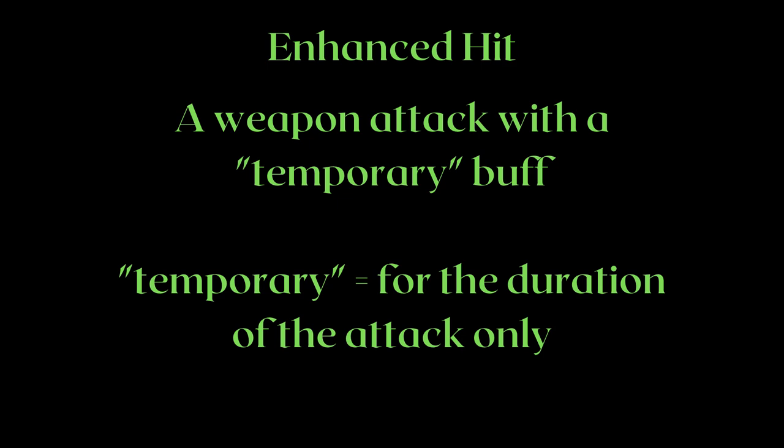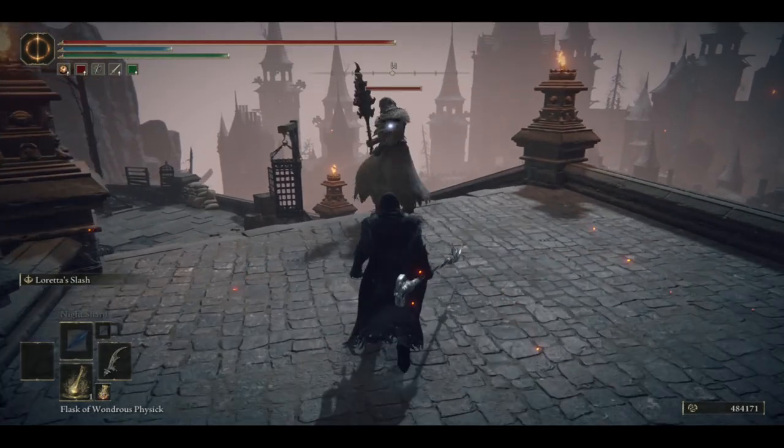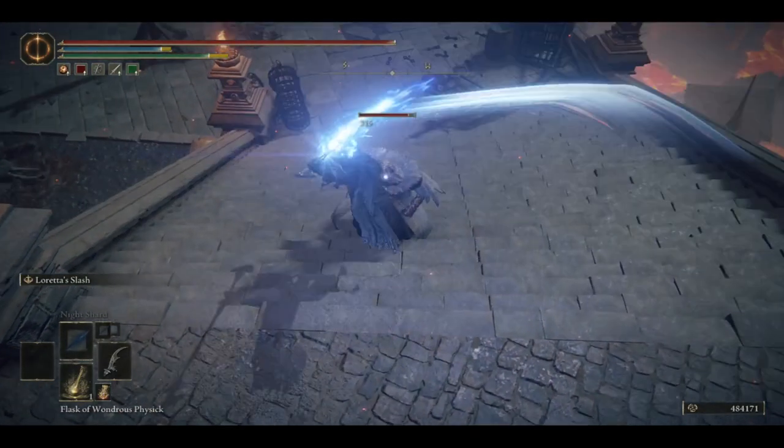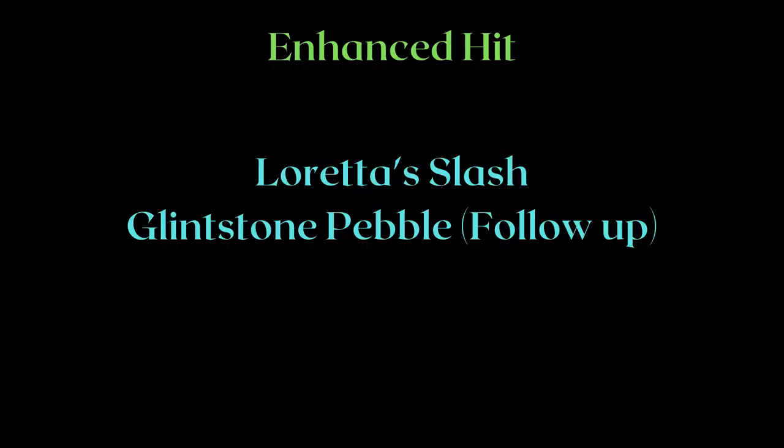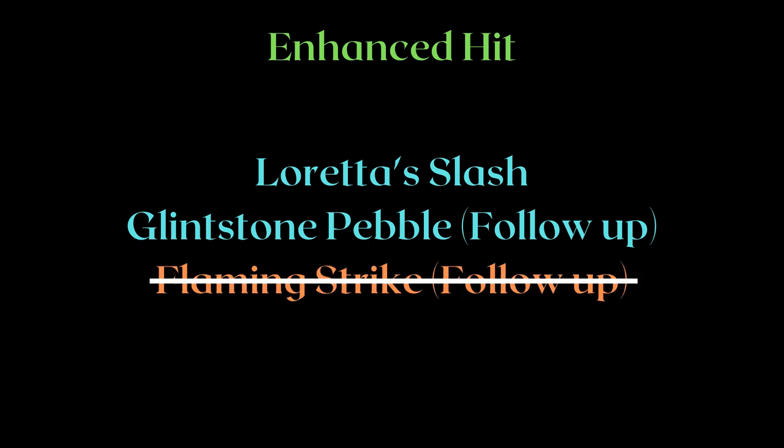Chapter 2: Enhanced Hits. What exactly is an enhanced hit? An enhanced hit is a weapon attack with a temporary buff — only for the duration of the attack itself. You will see your weapon glow when you do enhanced hit moves. For example, Loretta's Slash and the followup for Glintstone Pebble or Glintblade Phalanx are all enhanced hits. Even though the followup for Flaming Strike has a fire buff, it is not an enhanced hit. It is a fake enhanced hit, which I will go over later.